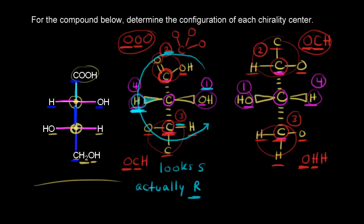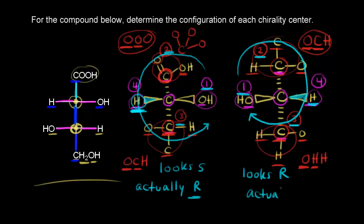Using the trick again: we ignore the hydrogen and look at one, two, and three. Going from one to two to three is clockwise, so this looks R. But because this is a Fischer projection, the hydrogen is coming out at us in space, so we take the opposite. If it looks R, it's actually S. So we write down S. We've determined the configuration of each chirality center: the top chiral center is R, and the bottom chiral center is S.